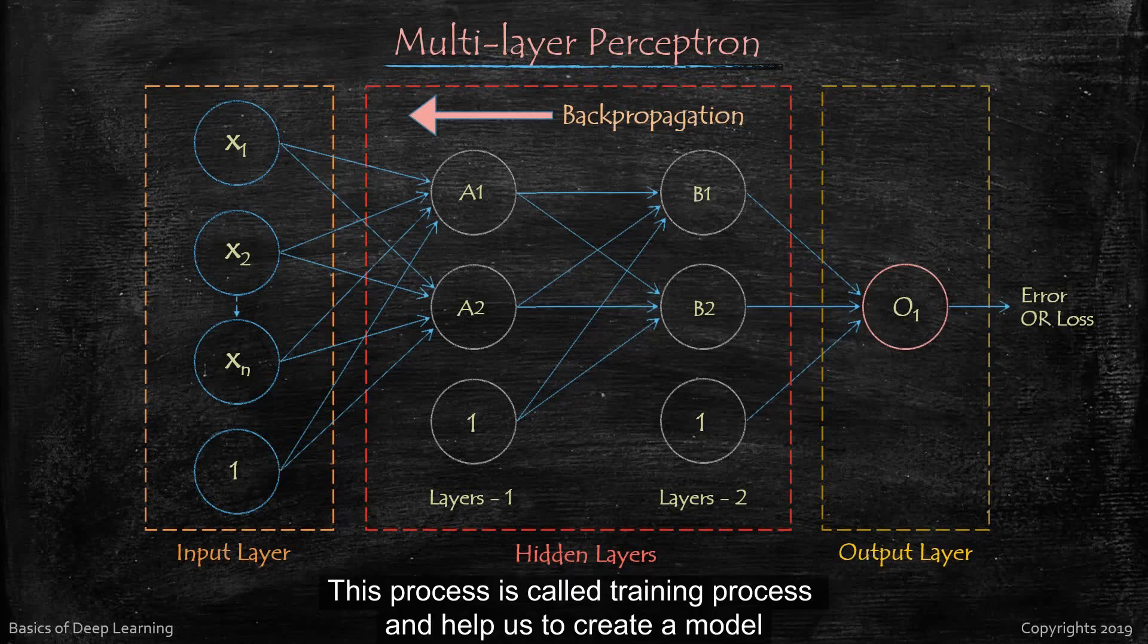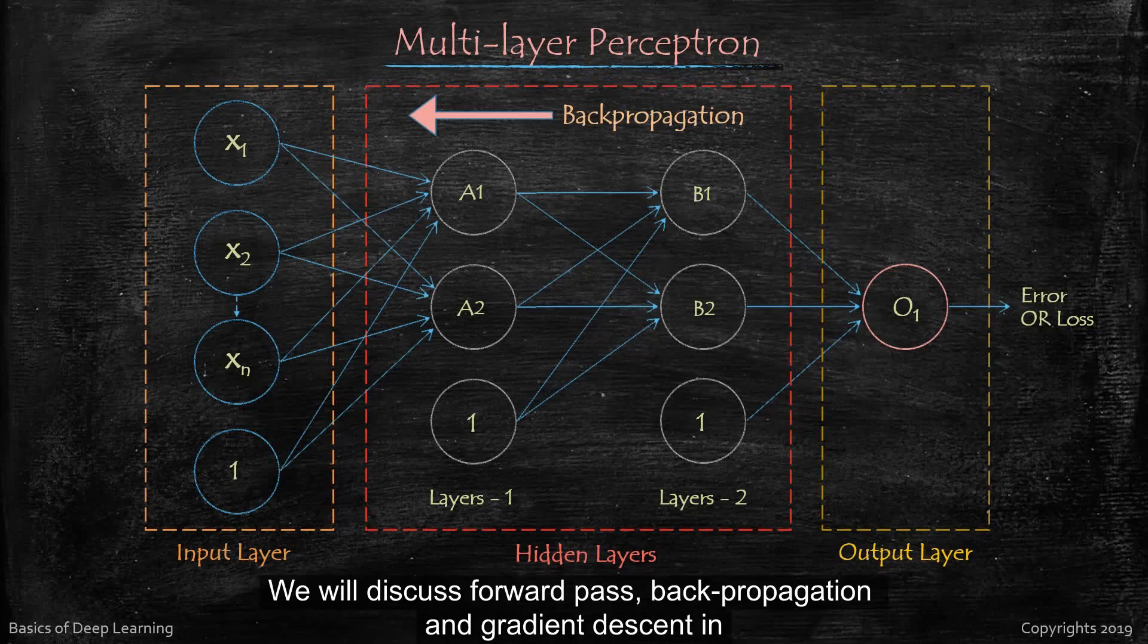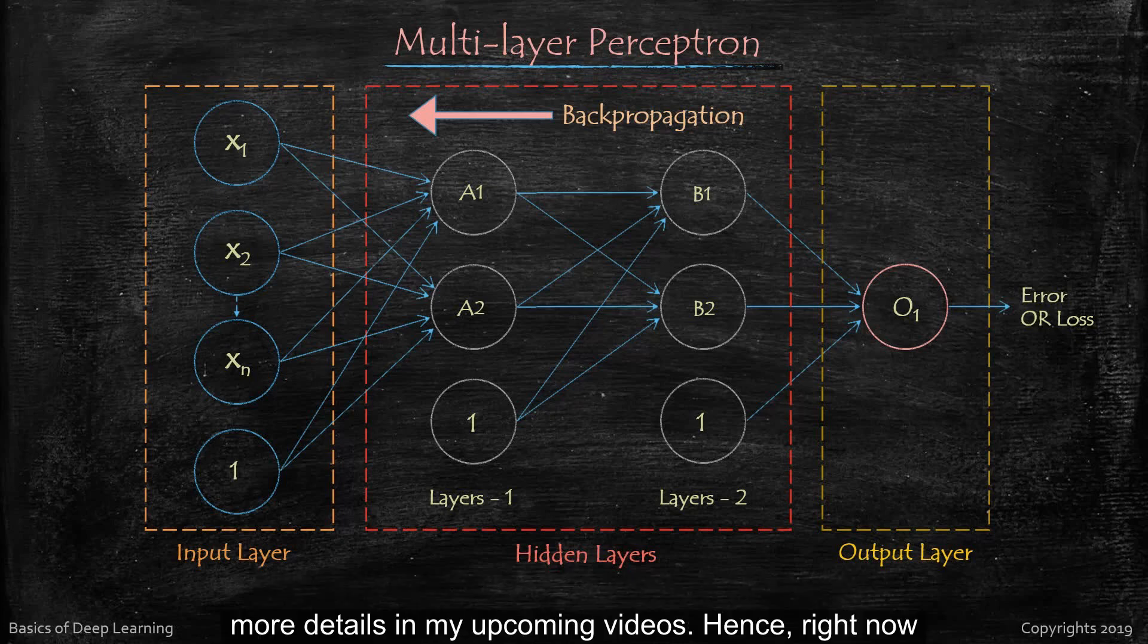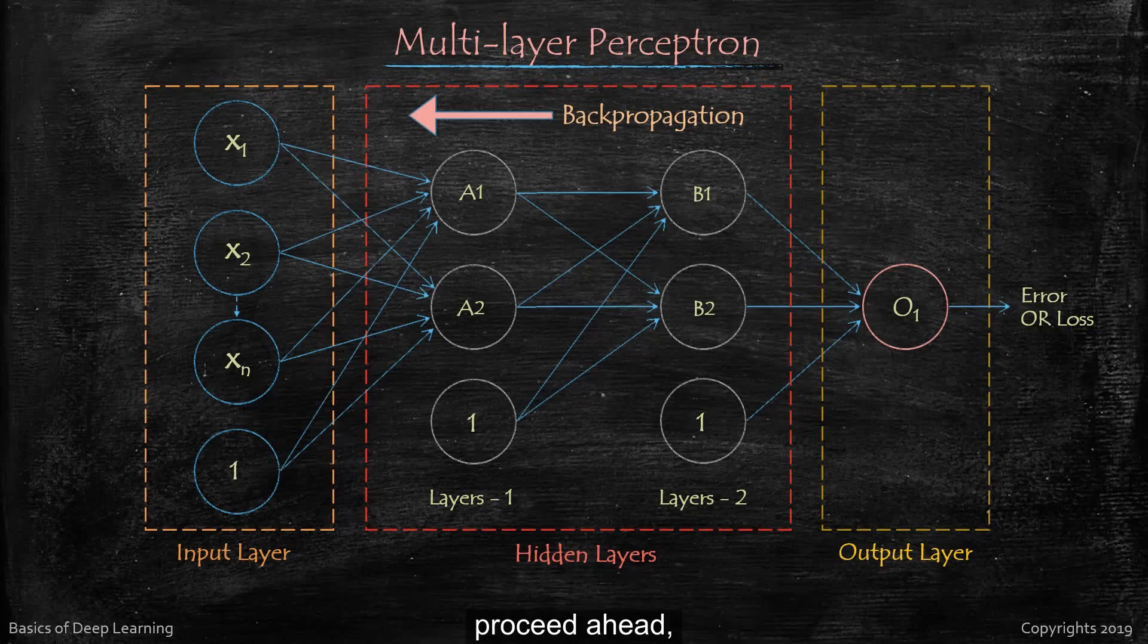This process is called training process and helps us to create a model that makes an accurate prediction on unknown data. We will discuss forward pass, back propagation and gradient descent in more details in my upcoming videos. Hence right now you don't need to get confused with these terminologies. As we will proceed ahead you will slowly get acquainted with it.